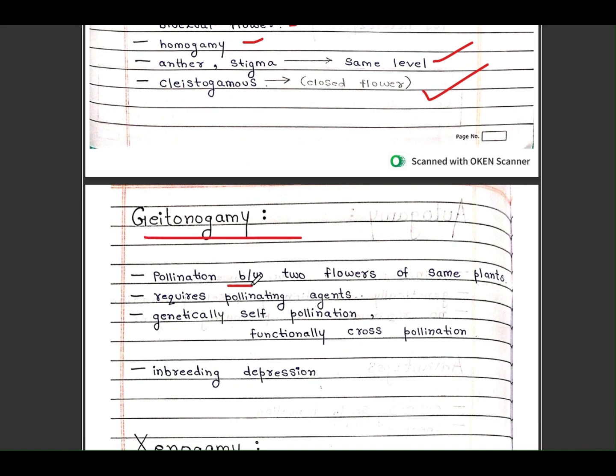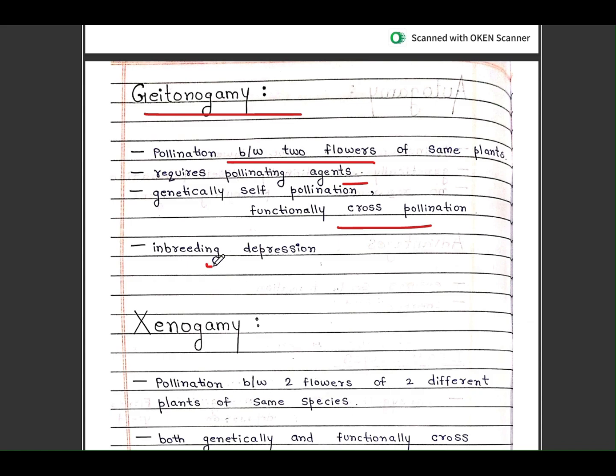Geitogamy: pollination between two flowers of same plant, requires pollinating agent. Genetically self-pollination, functionally cross-pollination, has inbreeding depression.